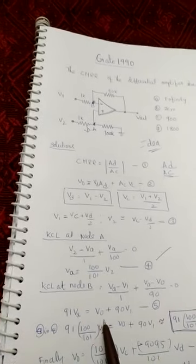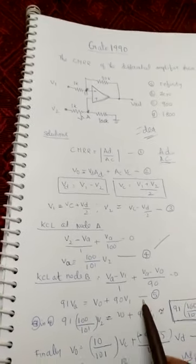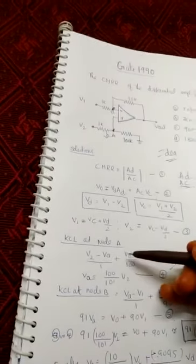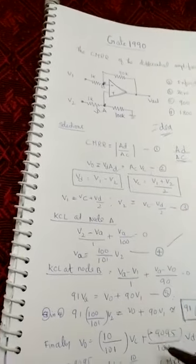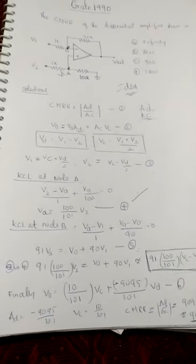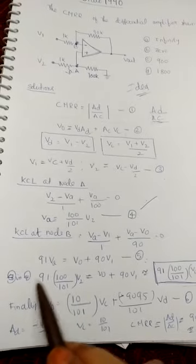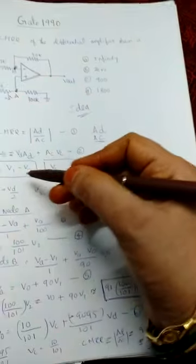From the node B equation, we get 91×VA equals V0 plus 90×V1. This is equation 2. From KCL at node A we got equation 1, and from node B we got equation 2. Substituting V1 and V2 in terms of Vc and Vd, and substituting into these equations, we finally get the output voltage in the form V0 equals Vd×AD plus Vc×AC.